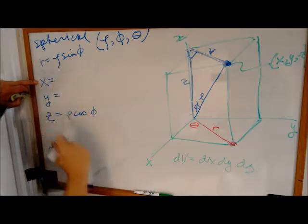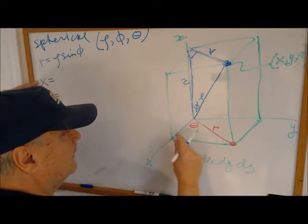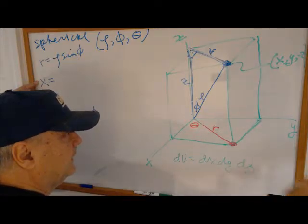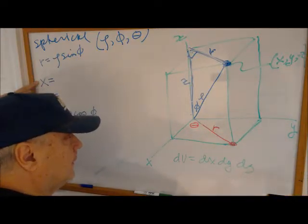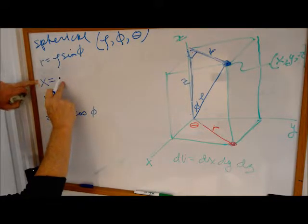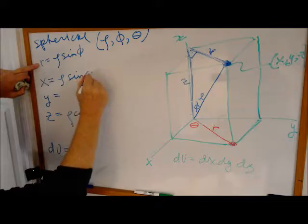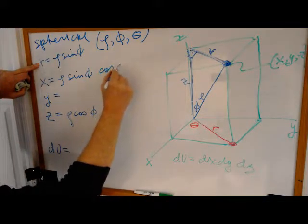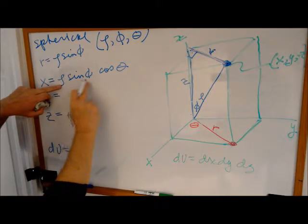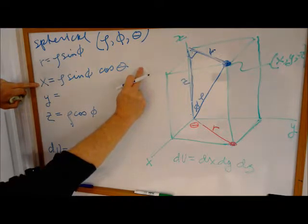What's x? Well, this is an x. In the xy plane, that's r cosine theta. So x is r, but r is rho sine phi cosine theta. So rho phi theta, rho phi theta. That's the formula for x.